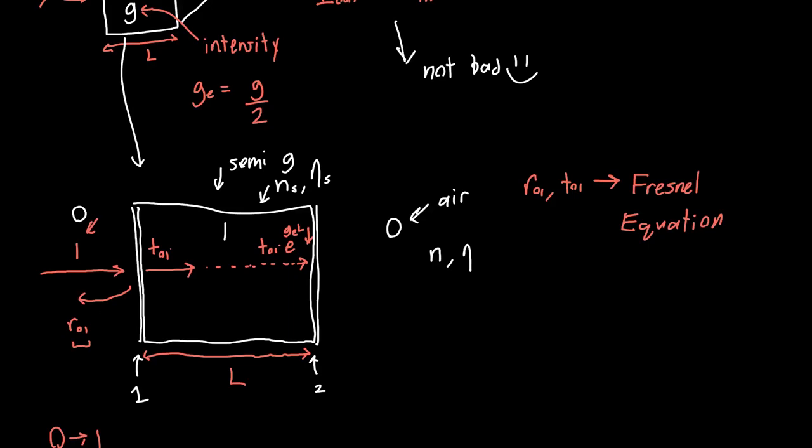Now a certain amount of this is going to get transmitted through this right-hand mirror, and we can calculate that it's just T_10 now times whatever the initial quantity was, so T_01 E to the G_E L.